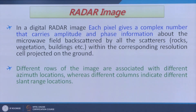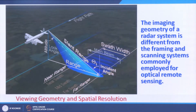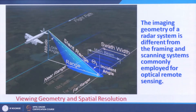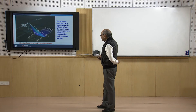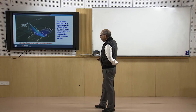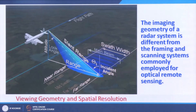Different rows of the image are associated with different azimuth locations because the satellite is also moving. Different columns indicate different slant range locations. If the flight path is like this, the slant range is the oblique distance; the altitude is the height; and the range projected on the horizontal plane gives the swath or band width. Only this strip of the earth is covered. The farthest part is called the far swath, the nearest is the near swath, and the incident angle is also defined here.